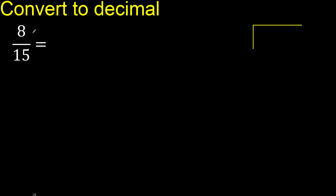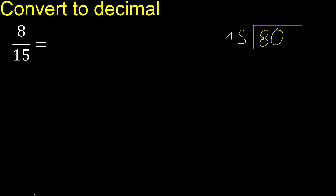8 divided by 15. 8 is less than 15, so complete with zero — write zero point. Now we work with 80.